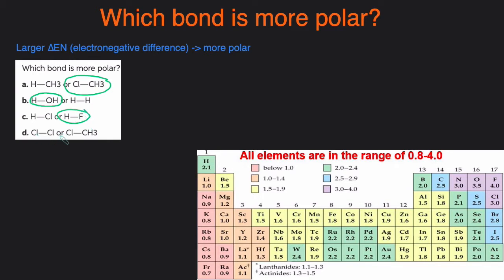And the last one: C-Cl versus Cl-Cl. Once again, when you have two elements that are exactly the same, that has an electronegativity difference of 0. So that's going to be nonpolar. This one, because it has a difference greater than 0, it's going to be more polar.